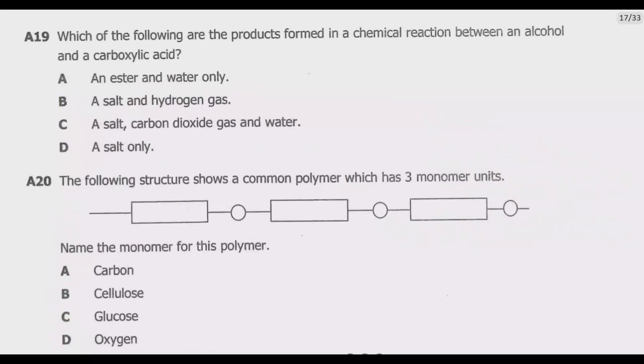Question 19: which of the following are the products formed in a chemical reaction between an alcohol and carboxylic acid? This is something you need to know in organic chemistry. When an alcohol reacts with a carboxylic acid, the reaction is known as esterification and the products formed are an ester and water.